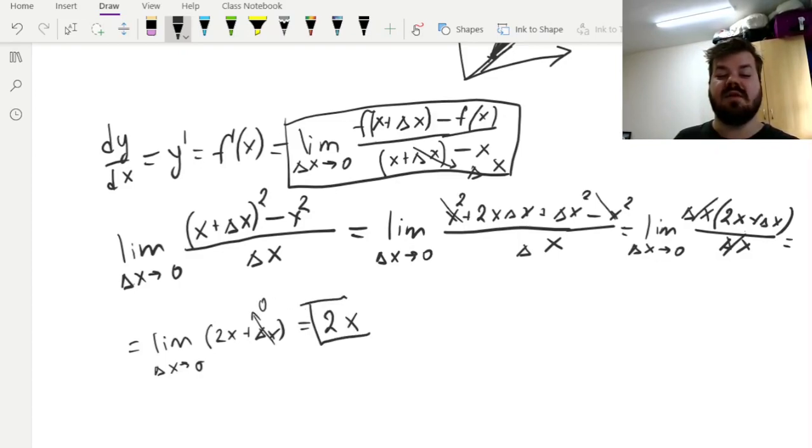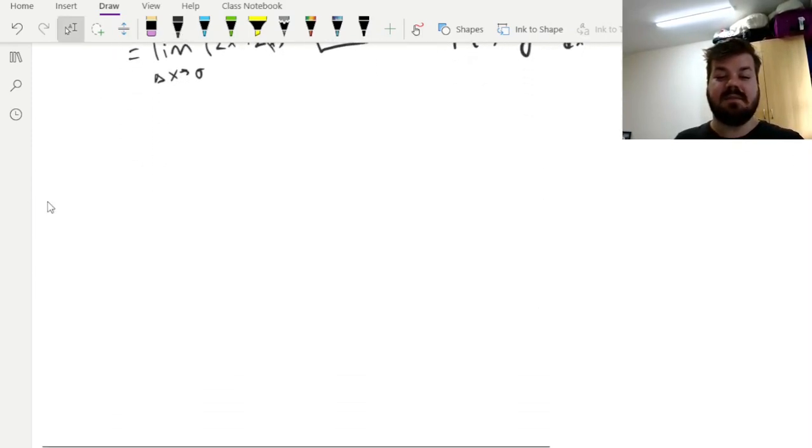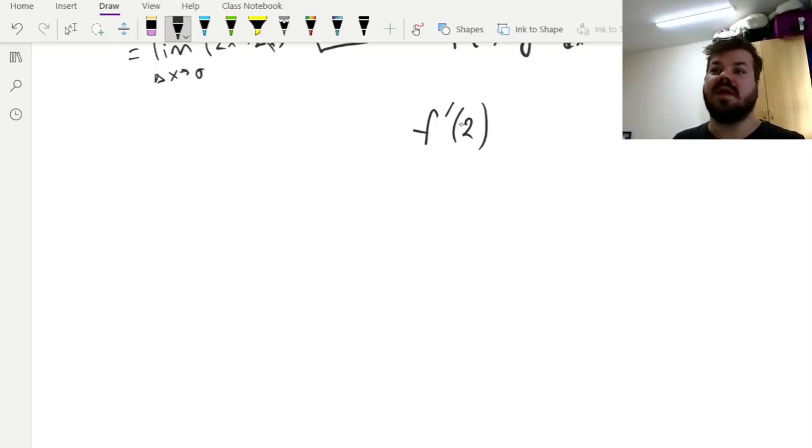meaning that f'(x), or y', or dy/dx is equal to 2x. And that means, in particular, that we're concerned with f'(2), that's instant speed at t equals 2, or the slope of the tangent line at point x equals 2, would be 2 times 2, 2x, and it'll be equal to 4.